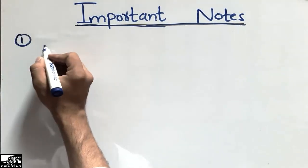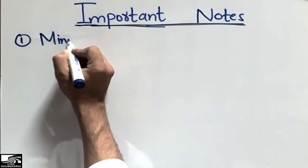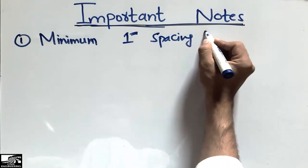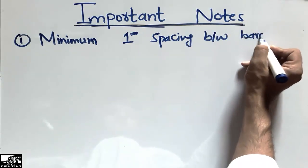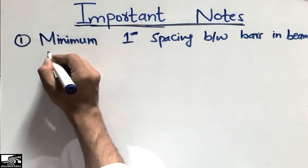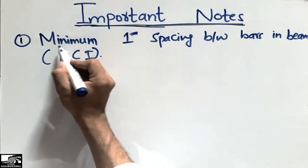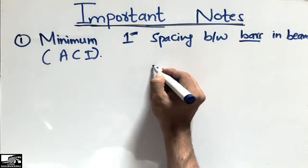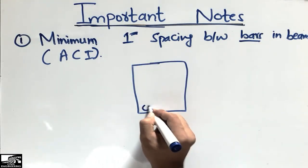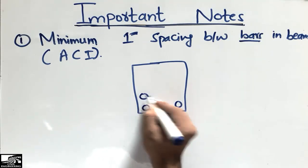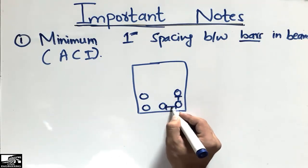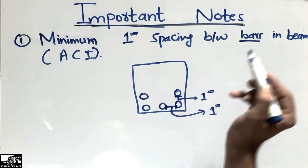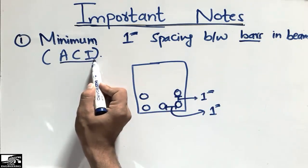The first point is that the minimum one-inch spacing between bars in a beam should be provided according to the ACI (American Concrete Institute). This applies to longitudinal bars. For example, in a beam, whether the bars are placed horizontally or vertically, the distance between any two bars should be a minimum of one inch, as per ACI codes.